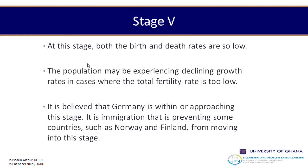In stage five, both birth and death rates continue to be low and the population begins to decline because total fertility is low. Countries like Germany and Sweden are typical of this stage.